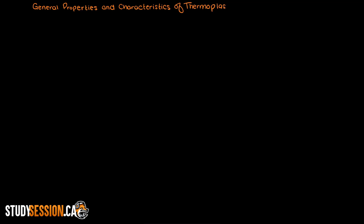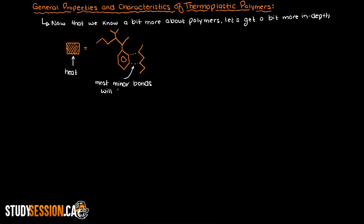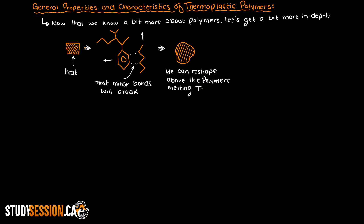Hi everyone. In this video we're going to be talking about the general properties and characteristics of thermoplastic polymers. In a previous video we briefly went through the key differences between a thermoplastic polymer and a thermoset polymer. Now that we know a bit more about polymers we can get more in depth about thermoplastic polymers. A thermoplastic polymer's most defining characteristic is that it can be heated and reshaped any way that we want. All we need to do is bring its temperature up to its melting temperature, at which point there is enough energy present to break all the minor bonds — typically hydrogen bonds and van der Waals forces — holding the polymers in place. This allows the polymers to slide around each other and reorient themselves, which is why we can physically reshape them.